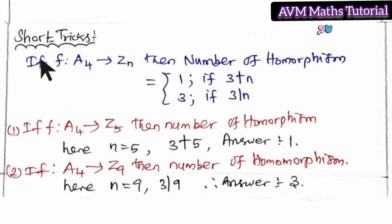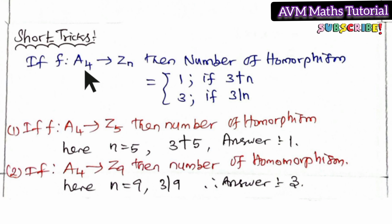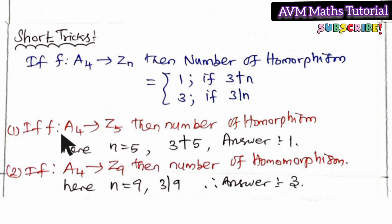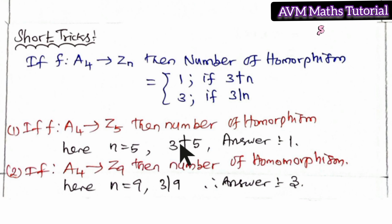The next trick: if F is from Z4 to N, then the number of homomorphisms depends on divisibility. This is a cyclic group of order N. If Z4 maps with parameter 3, the number of homomorphisms is 3. If Z4 maps with parameter 5, since 3 is not divisible by 5, the number of homomorphisms is 1.